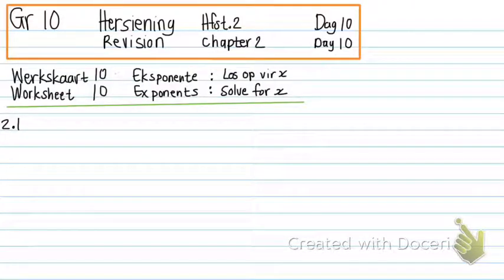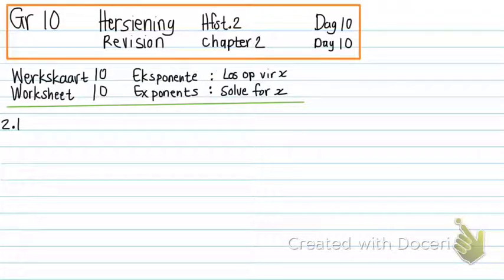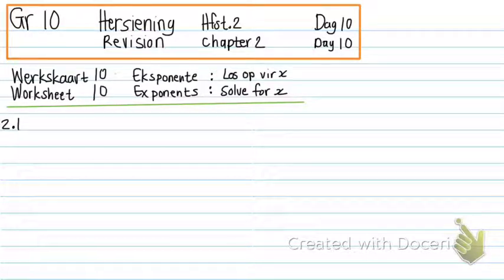Good day, grade 10. This is your revision for chapter 2, day 10, worksheet 10, about exponents — solve for X. You had to do the worksheet, and now we are going to work on the memo. Let me just open my worksheet here.